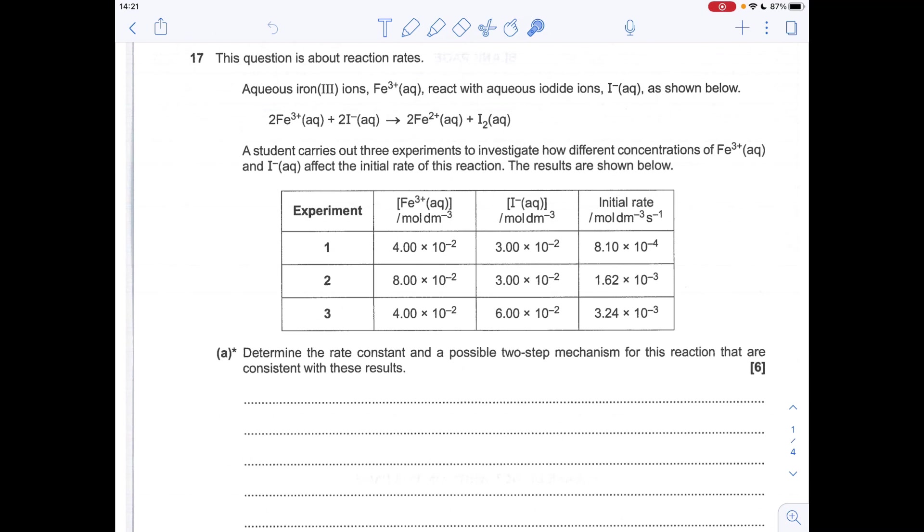So you can see experiments 1 and 2, the iodide concentration is kept at 3 times 10 to the minus 2. The Fe3+ concentration has doubled, and the rate has also doubled. So that's first order with respect to Fe3+. You don't need to write war and peace, you literally just write down what I've done there. Experiments 1 and 2, Fe3+ concentration times 2, rate times 2, first order for Fe3+.